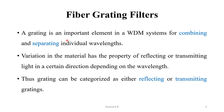A grating is used in WDM systems for combining and separating individual wavelengths. A grating is a periodic structure in a material. The variation in the material has the property of reflecting or transmitting the light in certain directions depending on the wavelength. Therefore, gratings can be categorized into either reflecting or transmitting gratings.